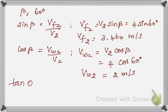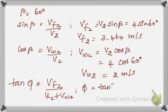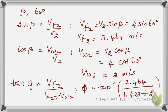Now substituting into the phi formula: phi = tan⁻¹(vf2 / (u2 + vw2)) = tan⁻¹(3.464 / (9.423 + 2)) = tan⁻¹(3.464 / 11.423). This gives phi = 16.87°, or 16 degrees 52 minutes. The first part is complete.